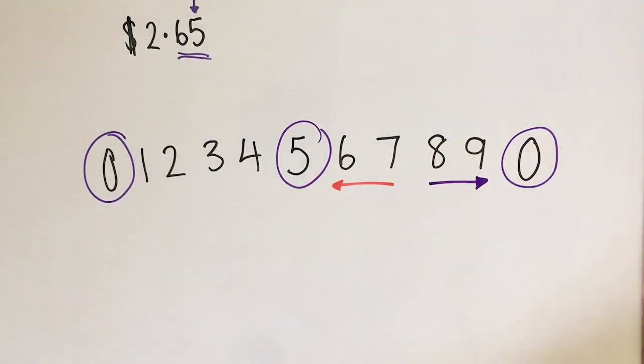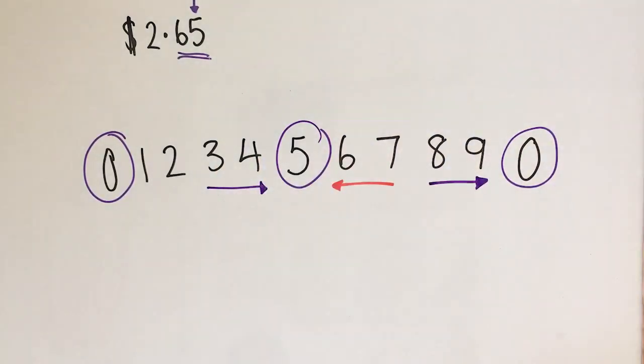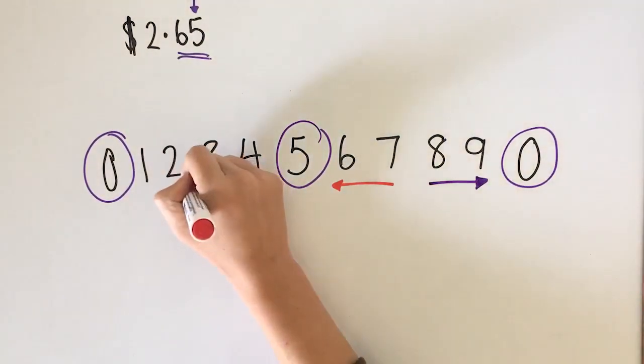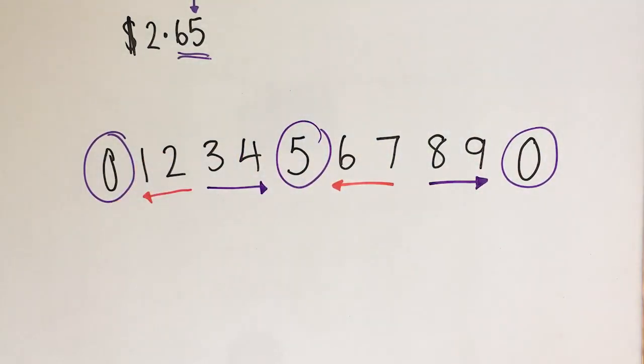Similarly if it's three or four we're going to round up to the nearest five. If it's one or two we're going to round down to the nearest zero because again that's halfway.